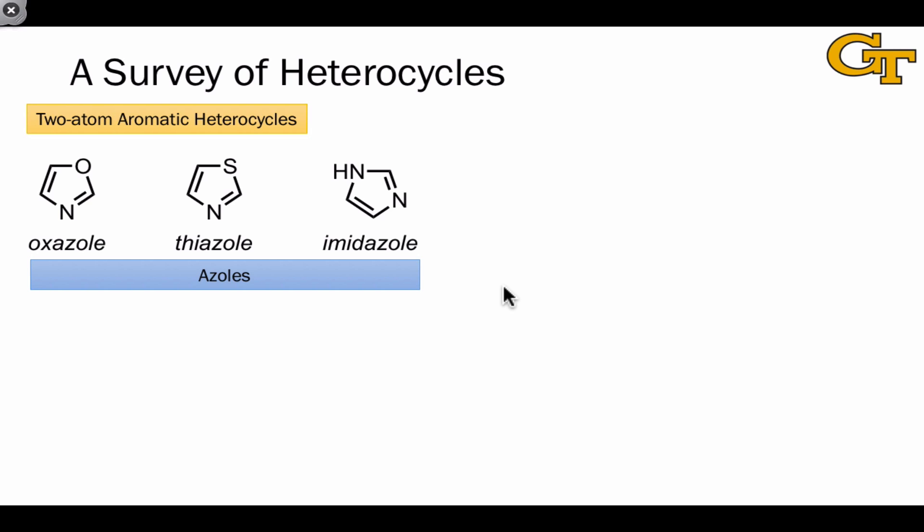We're going to look at two types of two-atom aromatic heterocycles here, heterocycles containing two hetero atoms. The first are called the azoles.